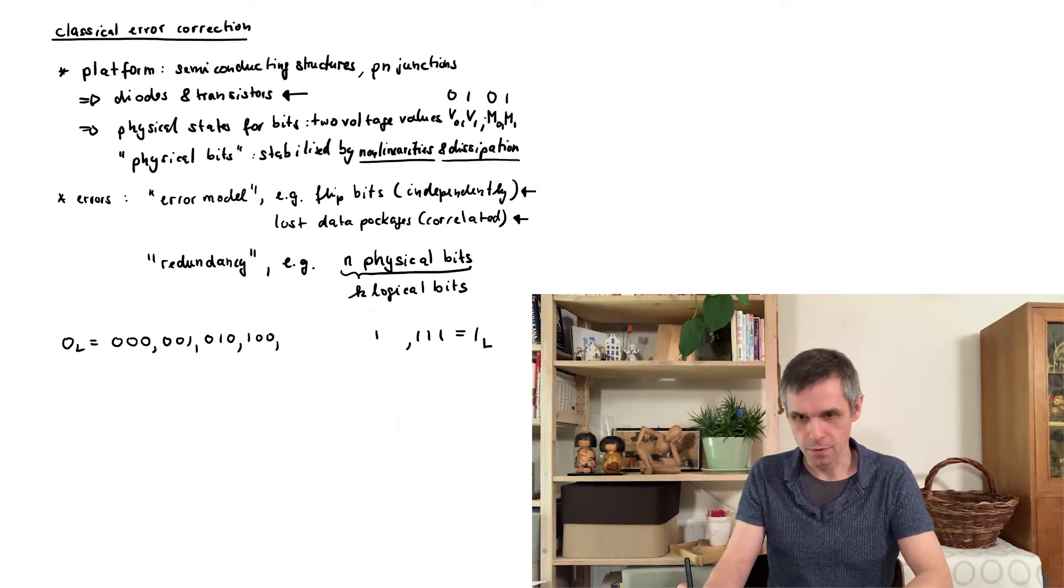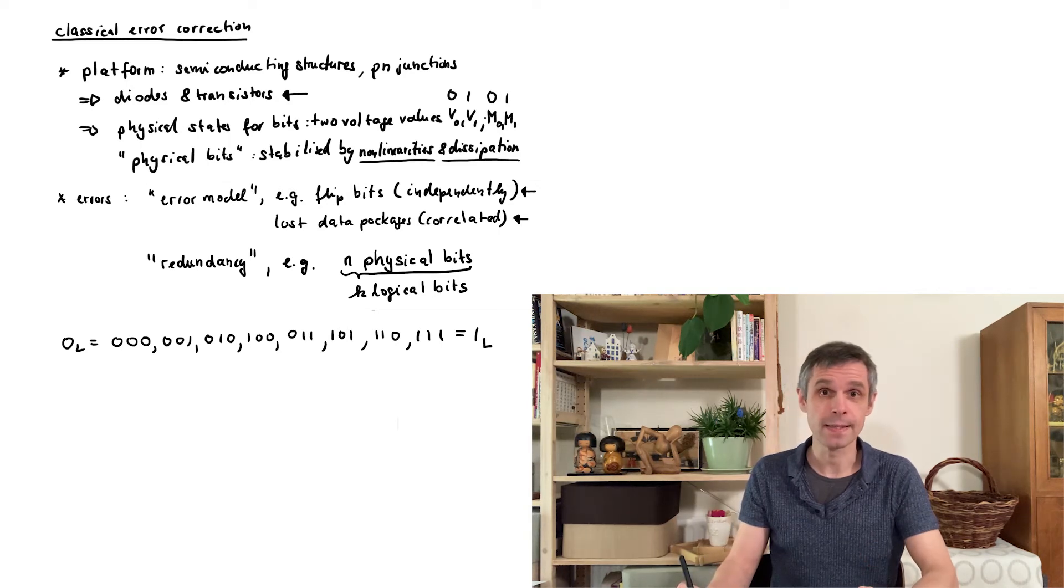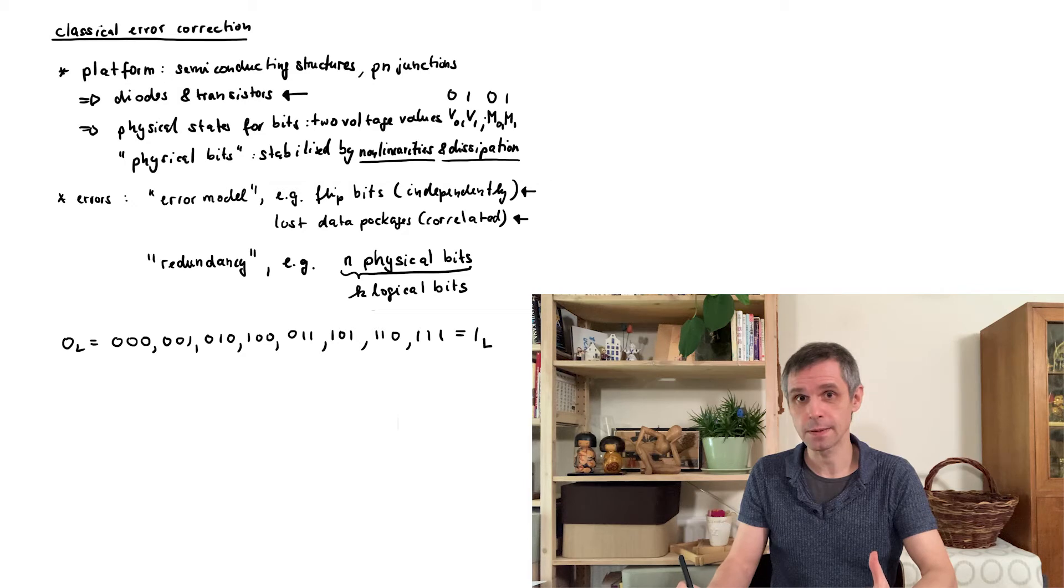And when we do the same starting from the other logical bit, then we obtain these three states here. This covers all eight states of these three physical bits, and in particular not more. So there is a unique relation between the states with an error and the states without an error where they arrived from.